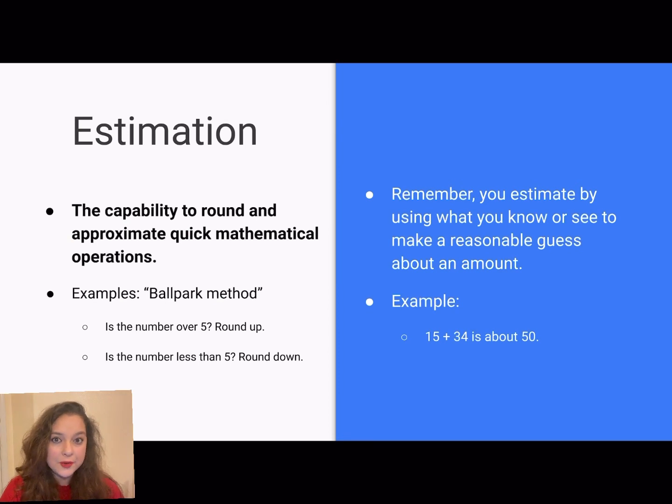So another example is 15 plus 34 is about 50. Now we all know 15 plus 34 is 49, but you can use estimation by saying 15 ends in a five so I'm going to bump that up to 20, and then 34 ends in a four so I'm going to round that down to 30. So 20 plus 30 is 50 and it just gives you a good guess.